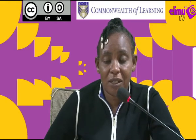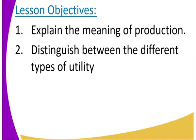Let us look at the lesson objectives. Today we are going to look at the definition of production, then give the different types of utilities. By the end of the lesson, the learner should be able to explain the meaning of production, and number two, explain the four types of utility.